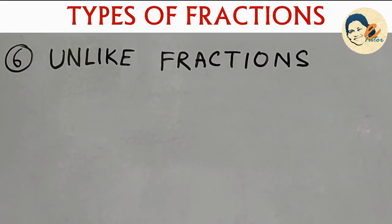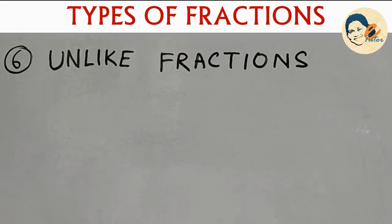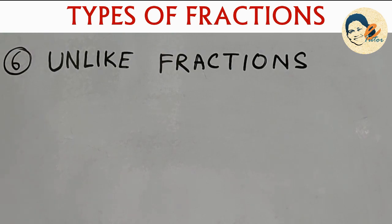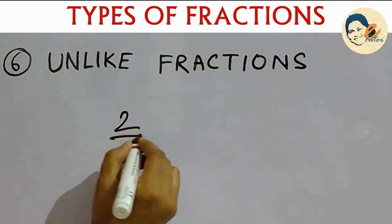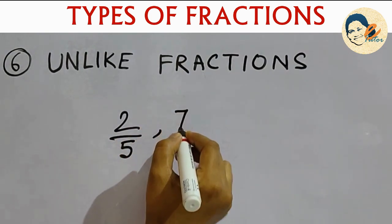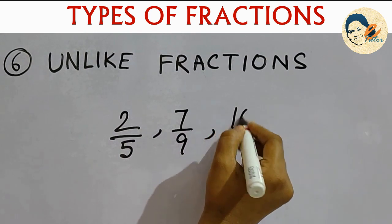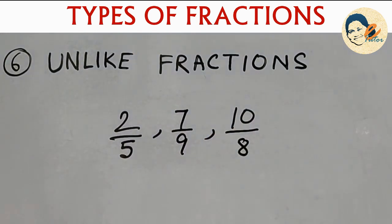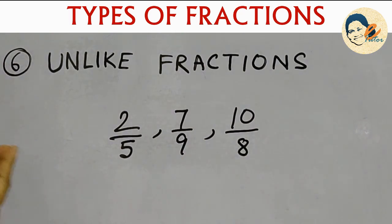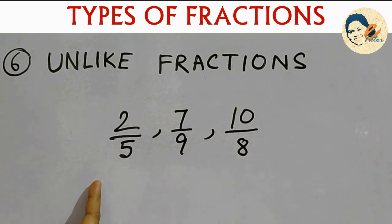Fractions which have unequal or different denominators are called unlike fractions. For example, 2/5, 7/9, 10/8 — these fractions have different denominators, so this is a set of unlike fractions. Simplification for such fractions is a little more tricky because the denominators are not equal, so first you have to find a common denominator, then proceed with addition or subtraction.